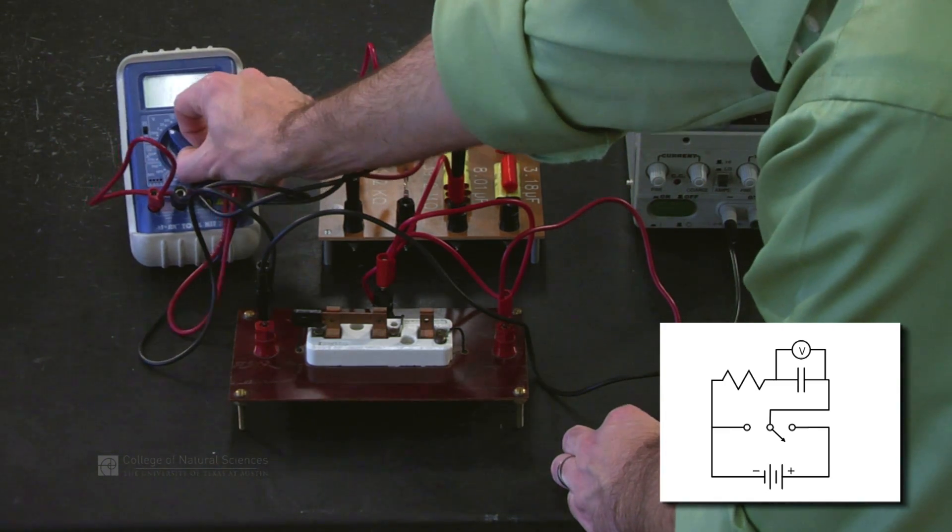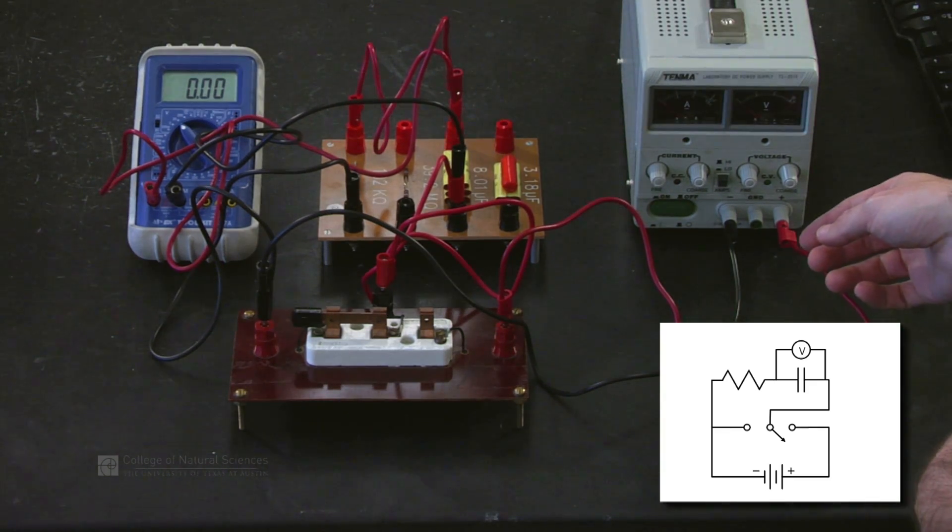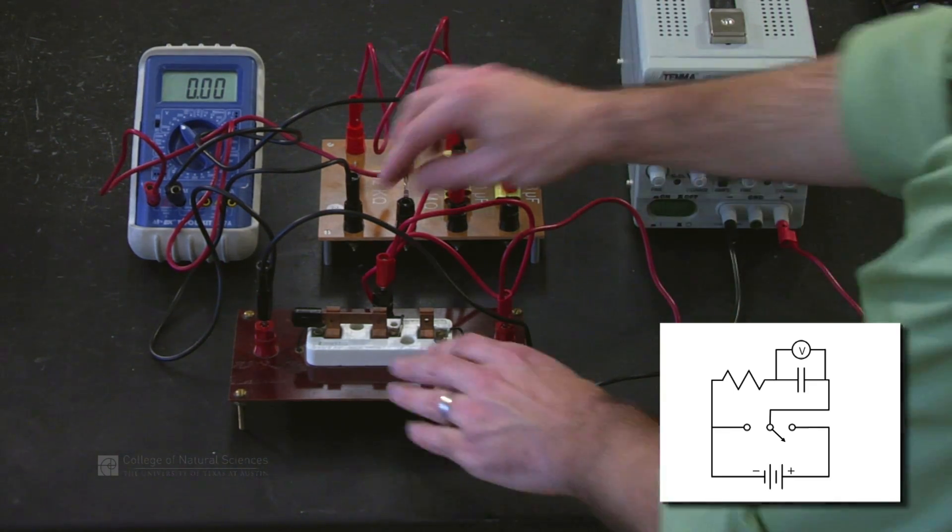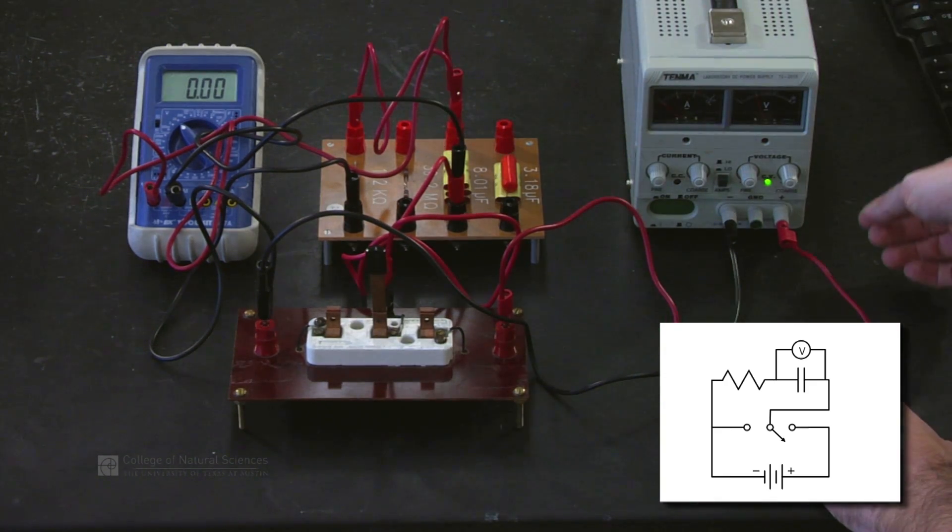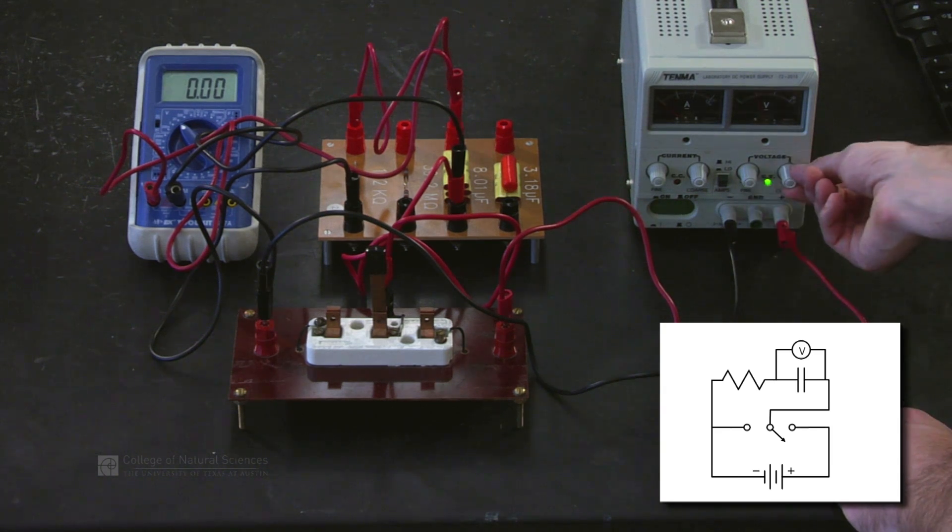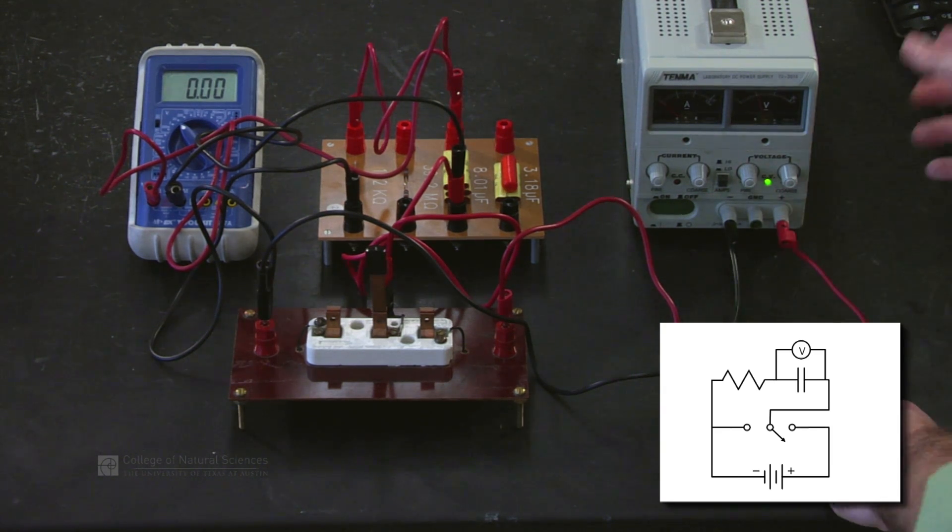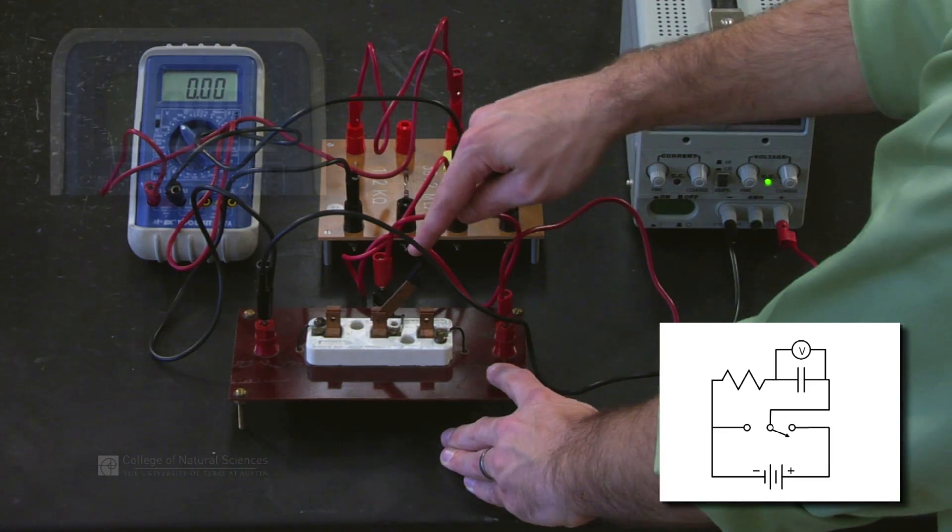We're setting this to 20 volts DC and now we can make sure the switch is open. Turn the voltage source on. I'm setting it to right around 10 volts and when we close the switch we're going to start charging the capacitor.